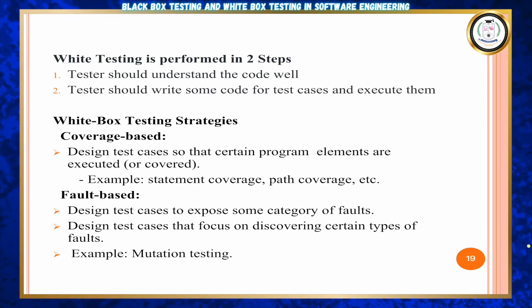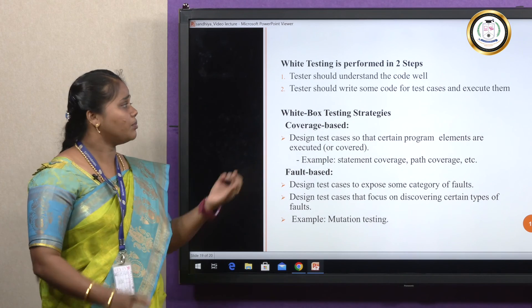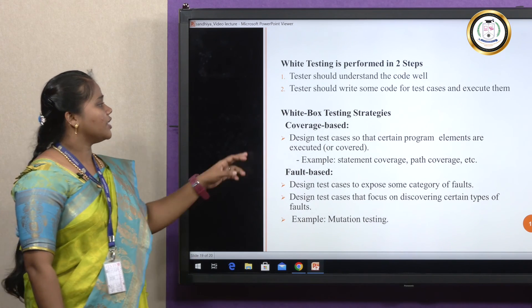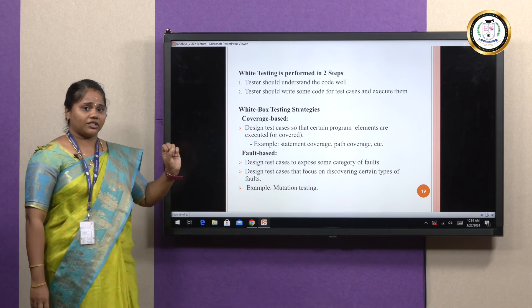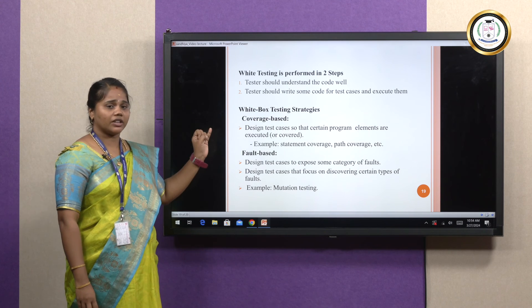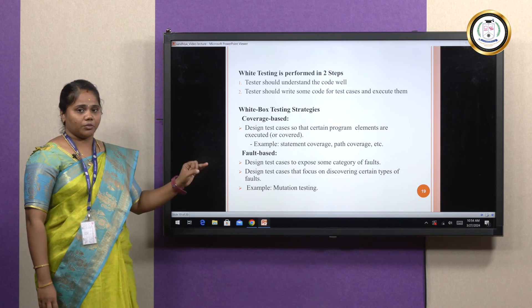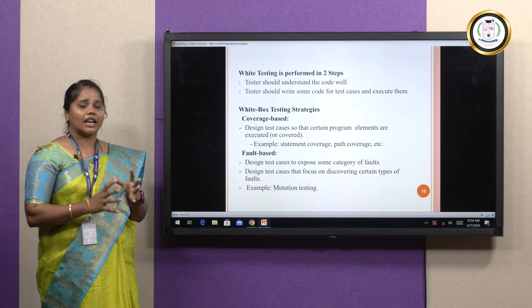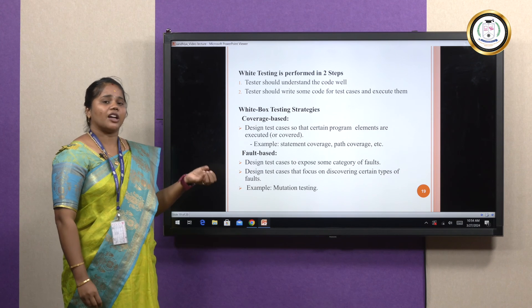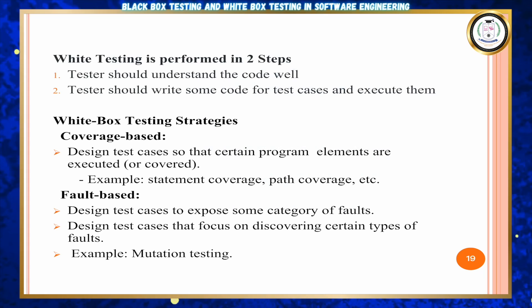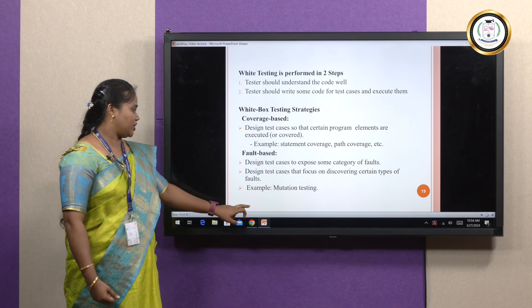White box testing is performed in two steps: first, find out the code structure; then, write code for all possible test cases. The strategies under white box testing are coverage-based and fault-based. Coverage-based testing includes elements to be executed — for example, statement coverage and path coverage. Fault-based testing categorizes faults — for example, mutation testing.